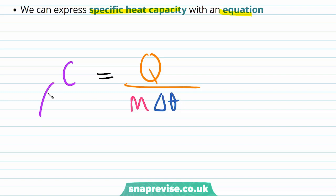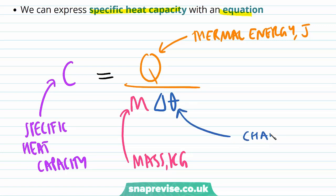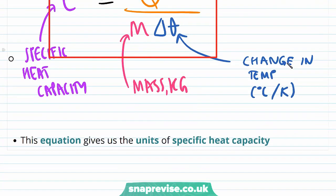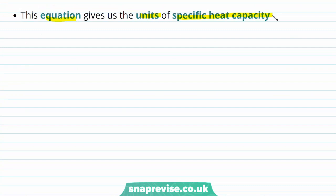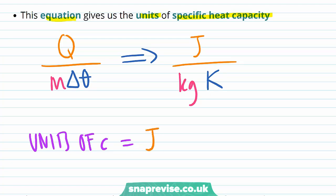C is the specific heat capacity. Q is the symbol for thermal energy measured in joules. Mass is measured in kilograms. And change in temperature delta theta is measured in degrees Celsius or degrees Kelvin. Recall that a change in one degree Celsius is the same as a change in one degree Kelvin, so it doesn't matter which we use. The units of specific heat capacity are joules divided by kilograms times Kelvin, giving us joules per kilogram per Kelvin.